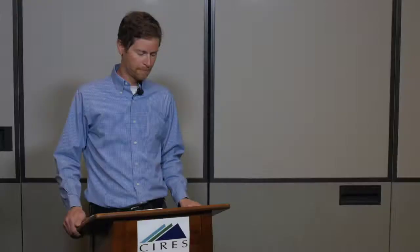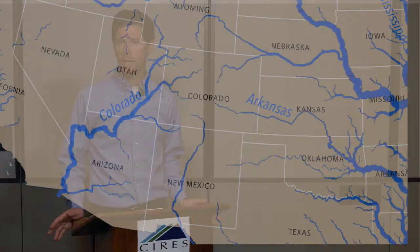First up let's talk about length. We might be interested in say the length of a stream or river. We generally would use the term miles, and a mile is equivalent to 1.6 kilometers. To give you a sense of scale, the Colorado River — which you'll hear a whole lot about during this course — is 1,450 miles long from its headwaters at La Puta Pass in Colorado to its mouth at the Gulf of California.